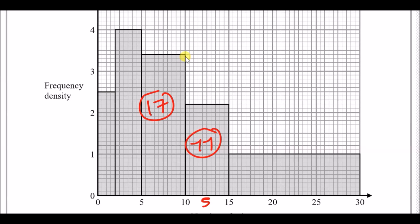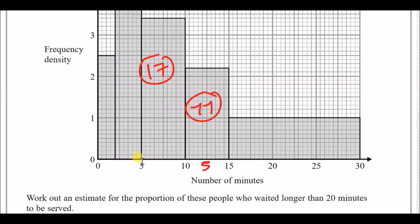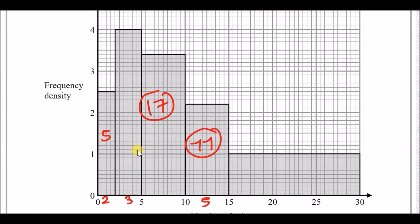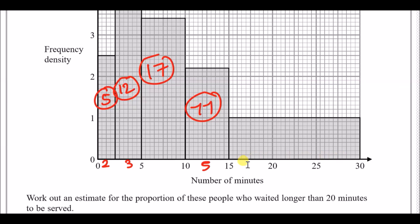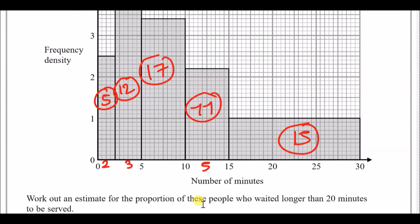Continuing with the remaining blocks: the scale goes up in 0.5, so we have a block with class width 2 and height 2.5, giving 2 times 2.5 which is 5. The next block has class width 3 and height 4, giving 3 times 4 which is 12. Then there's a long block with class width 15 and height 1, giving 15.